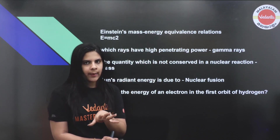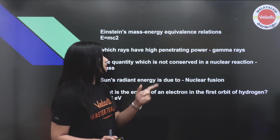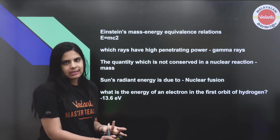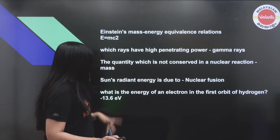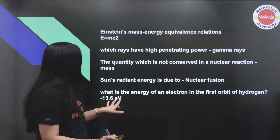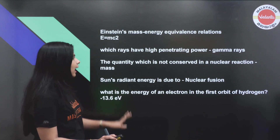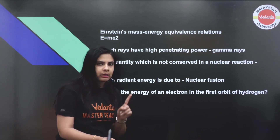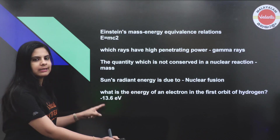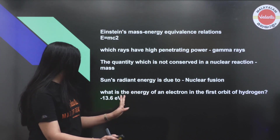The quantity which is not conserved in a nuclear reaction is mass. The sun's radiant energy is due to nuclear fusion. The energy of an electron in the first orbit of hydrogen is equal to 13.6 electron volts.